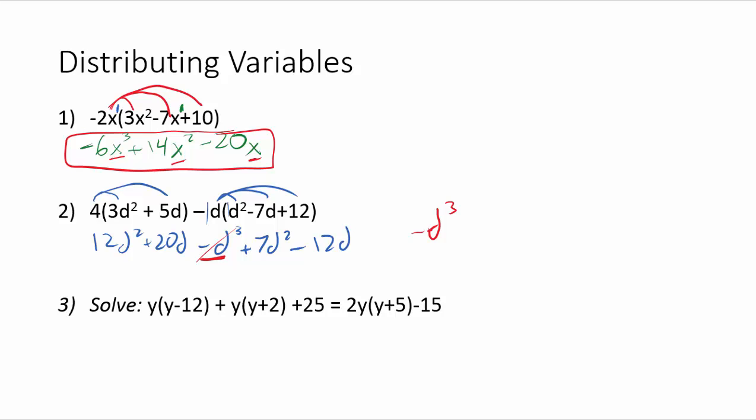I'll cross that off since we're done with it. I do see some d squareds that'll combine here though. So we've got a 12d squared and a 7d squared. This will give me a 19d squared. And next up here we've got a 20d and a minus 12d. That'll give us a plus 8d.